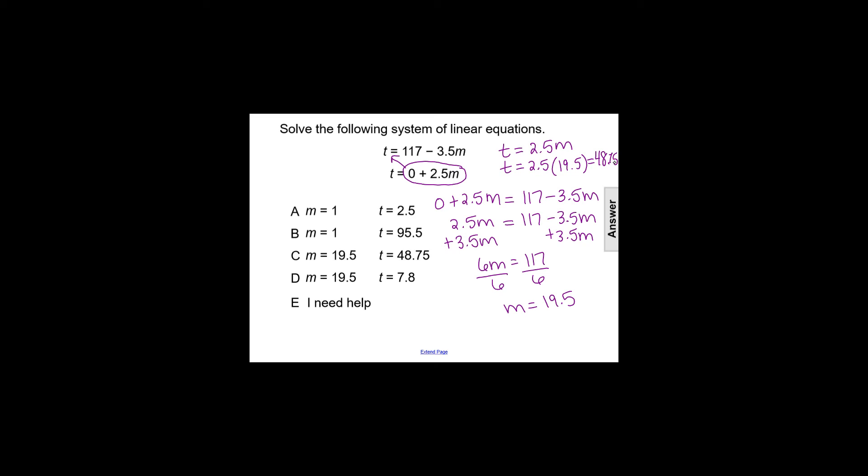So our value for m is 19.5, our value for t is 48.75. I'll rewrite it down here to make it a little bit easier to see.